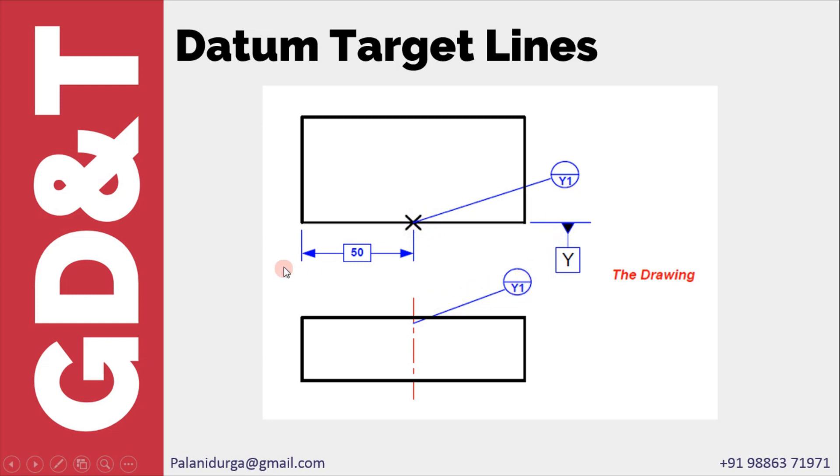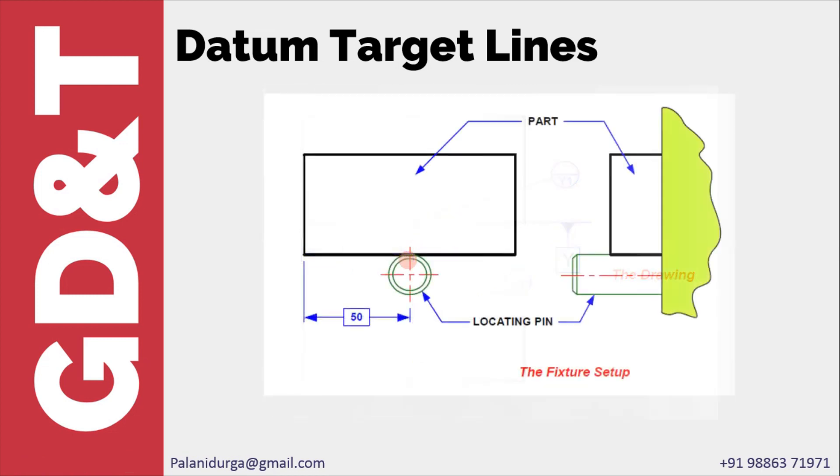Again you require a basic dimension to give the position of the line. If this is given in the drawing, then in the actual fixture or gauge, the cylindrical pin peripheral surface would be used or taken as a reference towards the component so that you get a line contact.